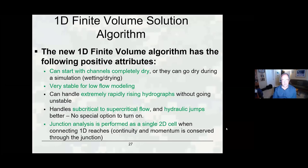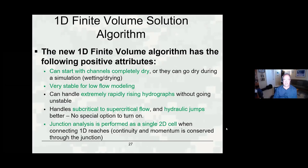The next topic is the 1D finite volume solution. Our 1D unsteady flow solver is pretty old, and after success with the finite volume approach in 2D, we applied the same algorithm to 1D. Benefits: you can now start channels completely dry and wet them, then go back to dry — complete wetting and drying in 1D just like in 2D. Very stable low-flow modeling, handles extremely rapidly rising hydrographs, handles subcritical to supercritical flow and hydraulic jumps right out of the box without a special mixed-flow option. At junctions, it performs a mini 2D solution for a single cell.